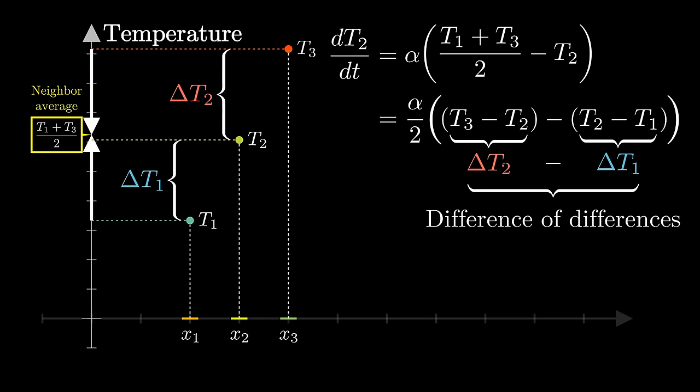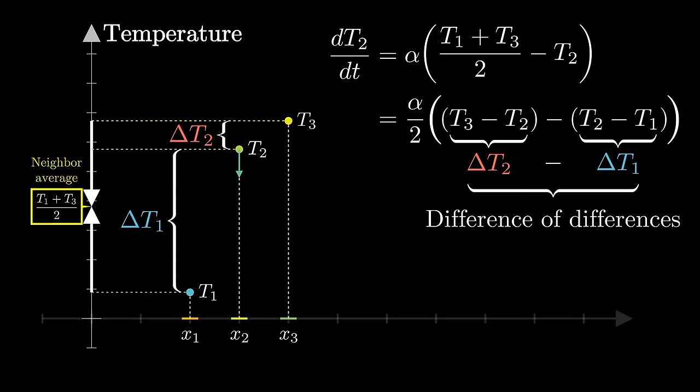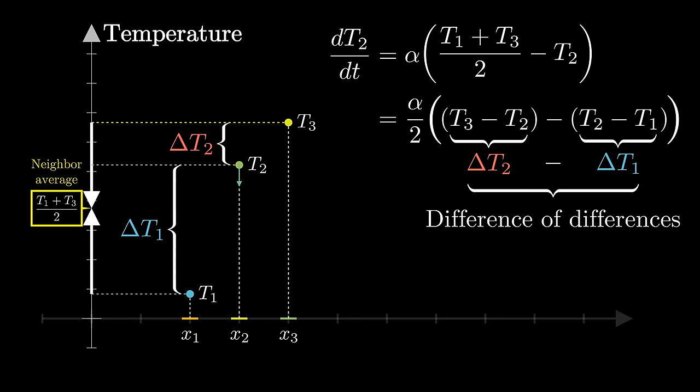And on the flip side, if the difference of the differences is negative, meaning delta t2 is smaller than delta t1, it corresponds to an average of these neighbors being less than t2.